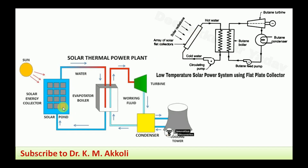There are two methods in solar thermal: one is the solar power pond and the other is solar collectors. A solar pond is a large salty-water pond that receives solar energy, collects it, and gets heated up to 60 to 70 degrees Celsius. That heated water is supplied to an evaporator or boiler in the primary circuit to transfer heat. In a heat exchanger, the heat from the water is transferred to a secondary working fluid with a low boiling point, which gets evaporated.